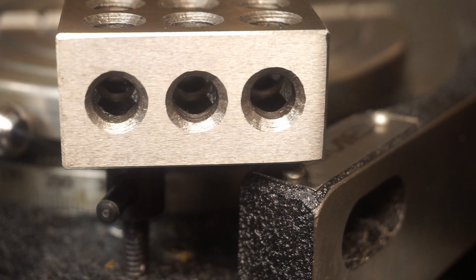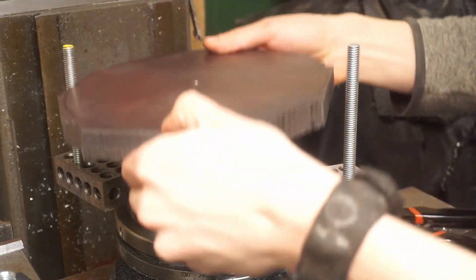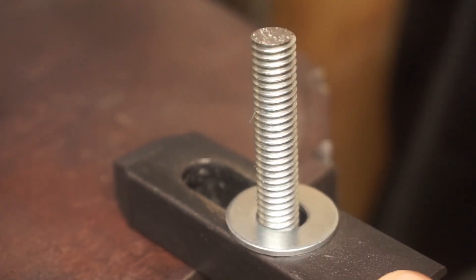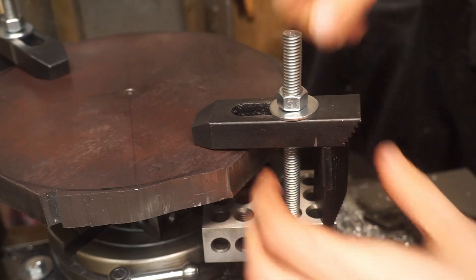Luckily, my 1-2-3 blocks have some threaded holes in them. To finish this setup, I needed to coaxially center the circle on the rotary table. This is where that quarter-inch hole I bored earlier comes in.